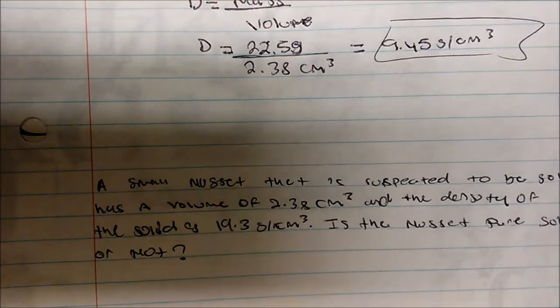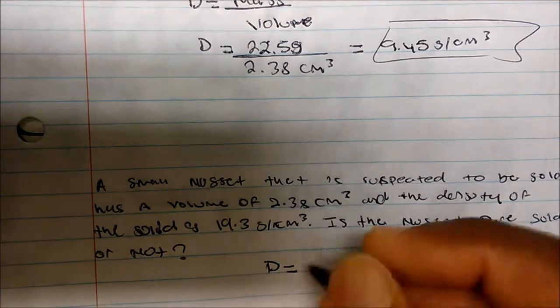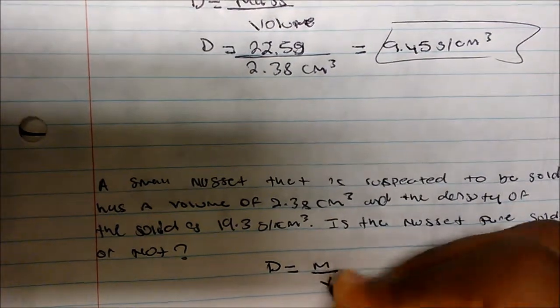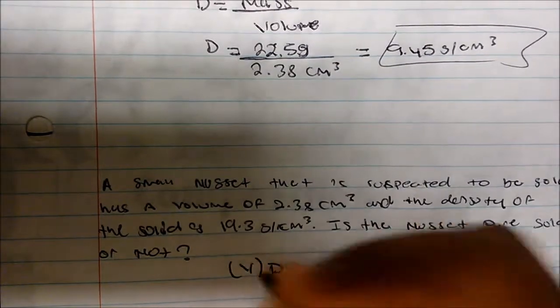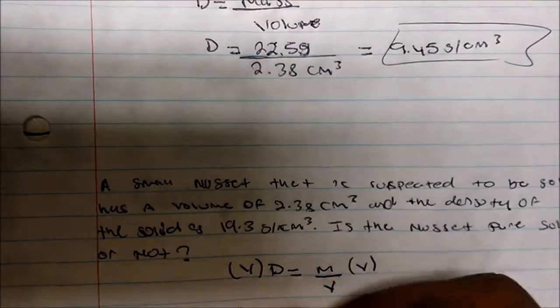And so if I'm solving for the mass, we know that D is equal to M divided by V. And so if I solve for mass, I'll multiply by V on both sides. Okay, and so in this case, we get the mass to be equal to the density times the volume.